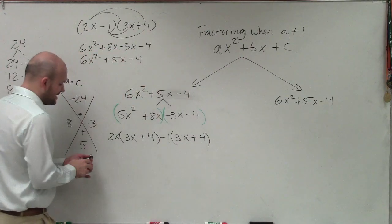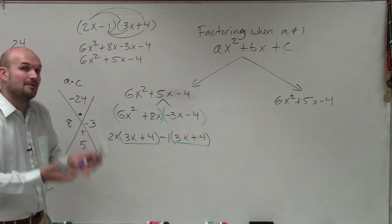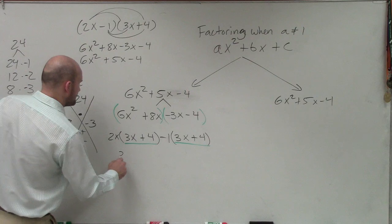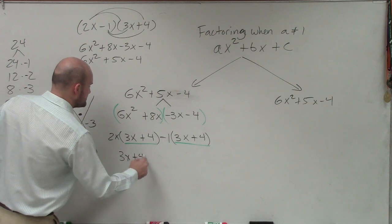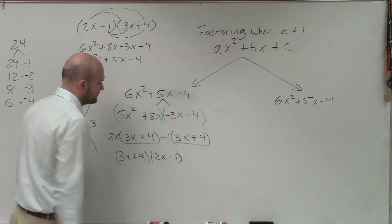Now you can see that these two expressions are exactly the same. So now what I'm going to do is factor them out again. So that's going to leave me with a 3x plus 4 times a 2x minus 1.